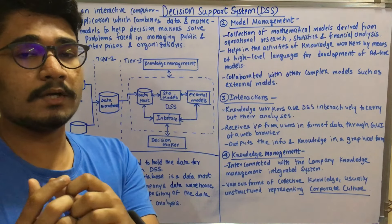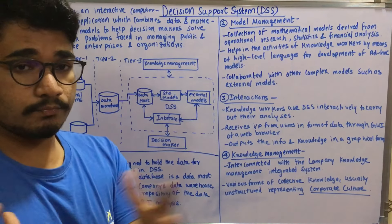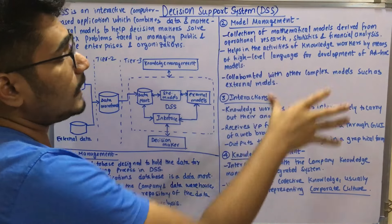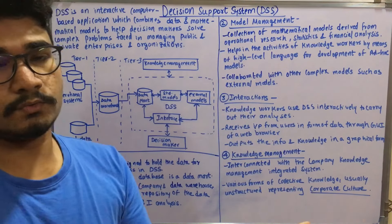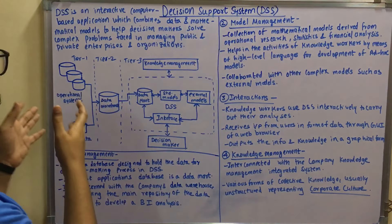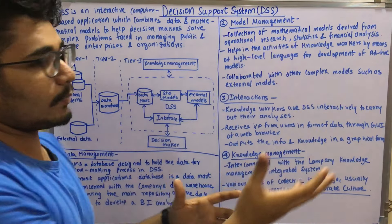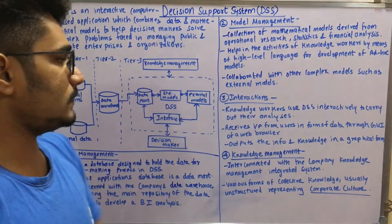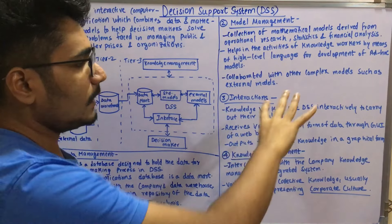You have some equations or observation inferences, and based upon that you develop a kind of model and manage it over a time period. It helps knowledge workers through high-level languages for developing ad hoc models, like unit testing and integration testing. It is also collaborated with external models — in order to derive a huge amount of data you collaborate with the external model, adding to the volume of the decision support system.